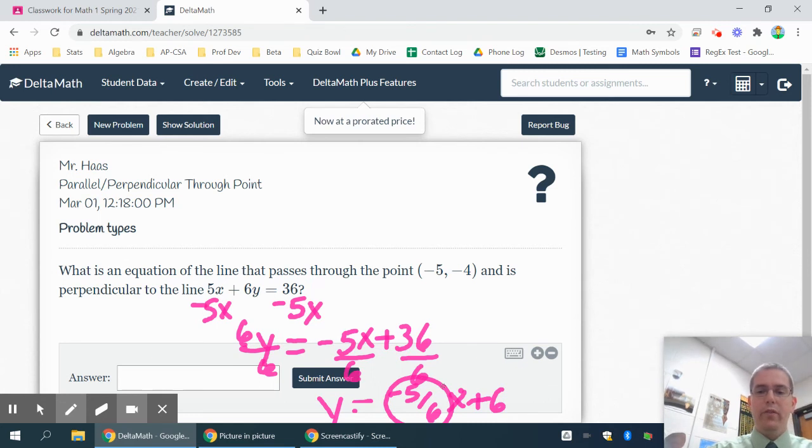So I'm looking for perpendicular. So the perpendicular slope means I have to flip it. So that's a 6 over 5. And switch the sign, so that's negative 6 over 5. And my point, of course, is this. So I'm going to use y equals mx plus b.